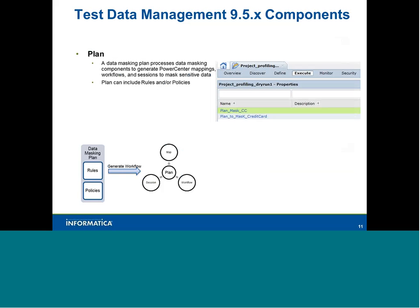Policy is a component that groups data domains. Like data domains and rules, policies are centralized — created once and used across multiple projects. A policy can include multiple rules and multiple data domains. For example, to mask card or health information, you include all relevant data domains and rules in a policy. The Plan is the final component — it combines rules, policies, or subset components and generates workflows in the Power Center repository.